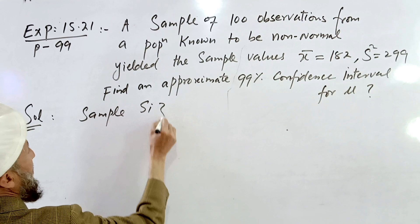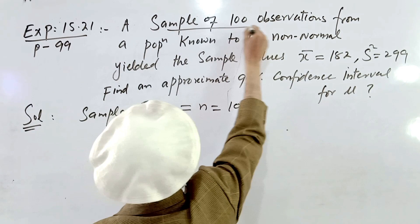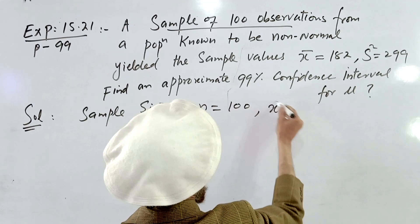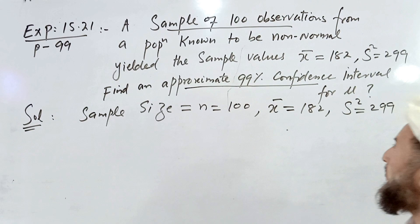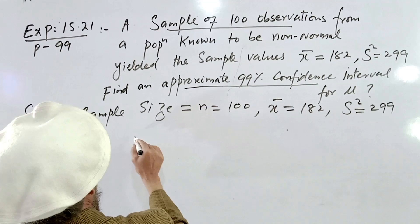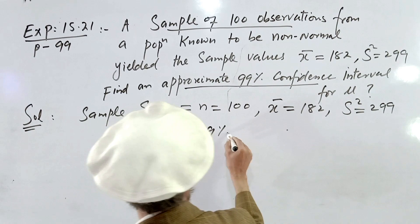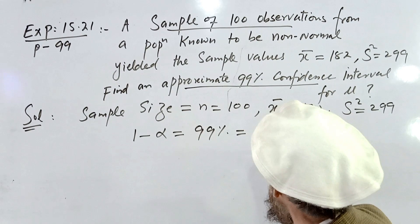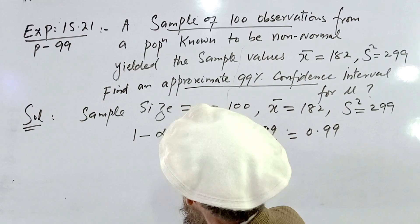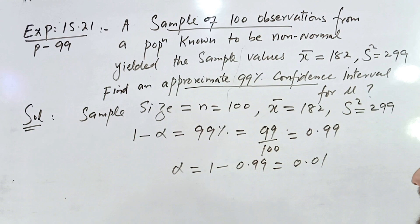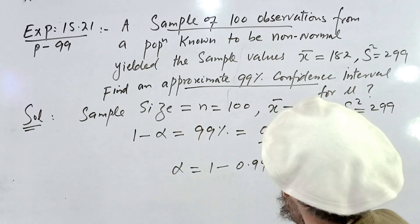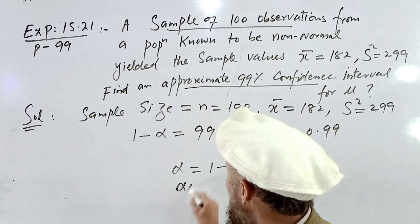We write the given data. Sample size n is 100. The sample mean X-bar is 182. The sample variance S-squared is 299. For the 99% confidence interval, 1 minus alpha equals 0.99, so alpha equals 1 minus 0.99, which gives alpha equal to 0.01. Therefore alpha divided by 2 equals 0.005.